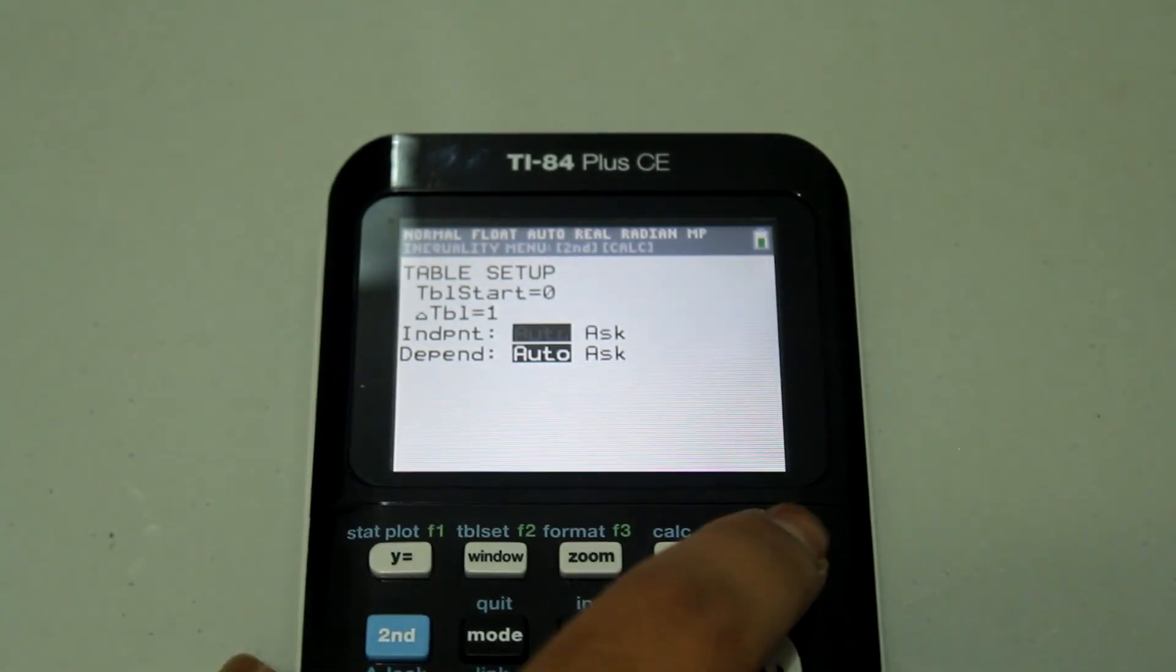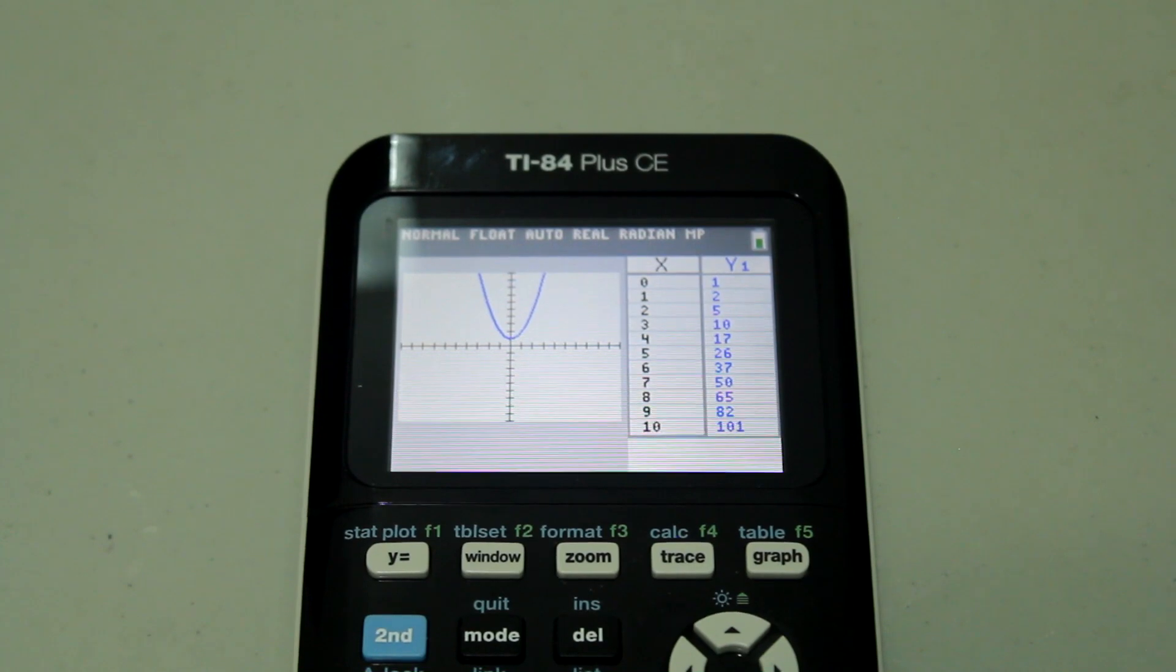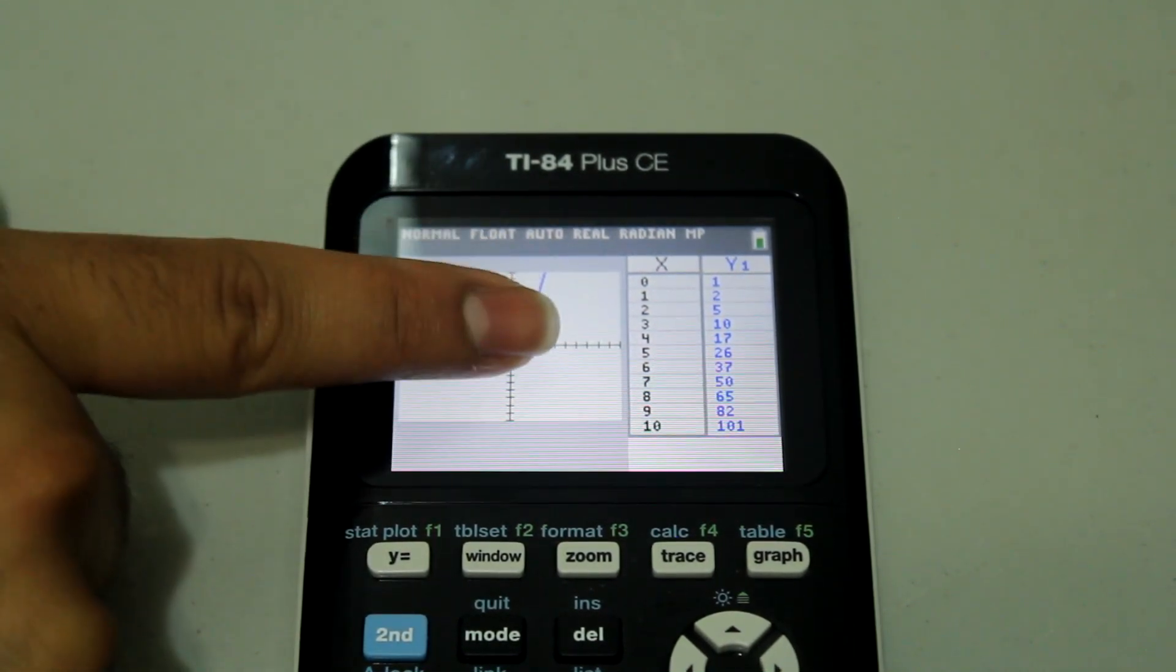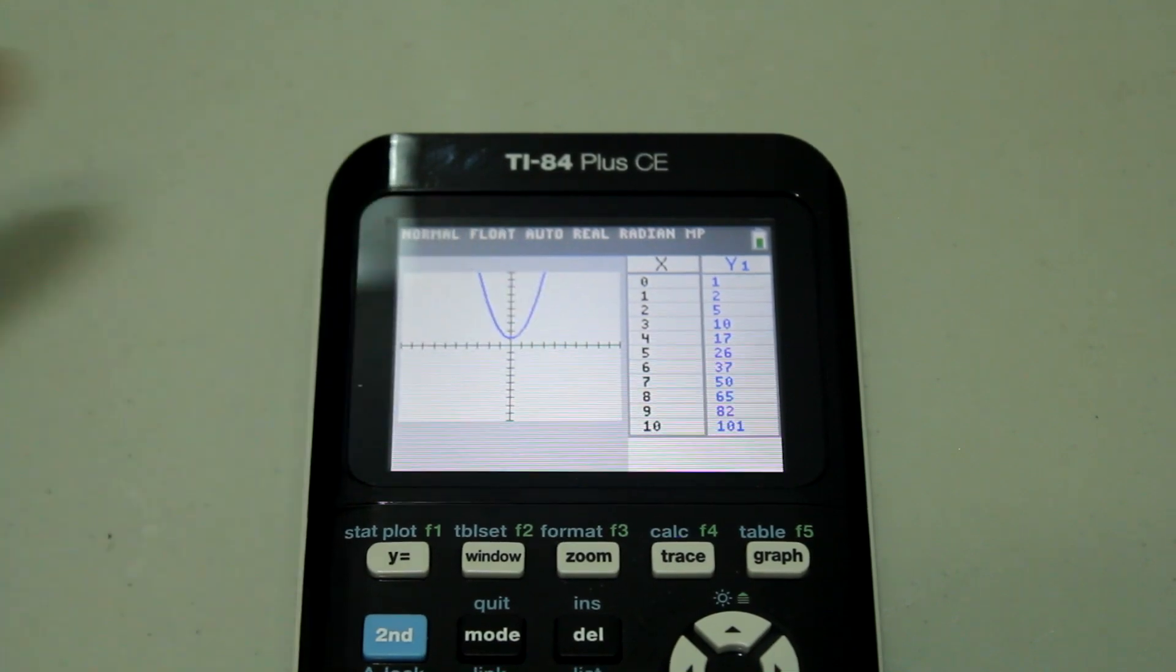Now if I go back to graph, I have my graph and the table with the intervals that I want.